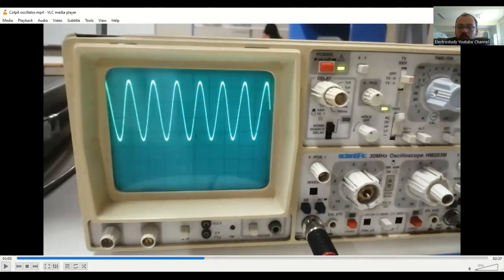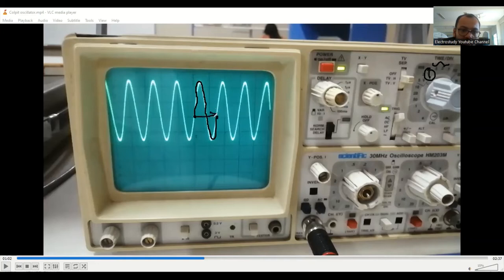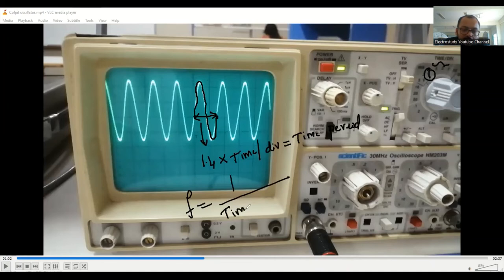I will tell you how to measure the frequency first. To measure the frequency, you have to measure the time per division. Number two, you need to measure the horizontal distance for completion of one cycle. It will be almost 1.4. This 1.4 should be multiplied with time per division. Then you will be getting the time period. Once I get the time period, how to get the frequency? Frequency is nothing but 1 by the time period. I will be getting the frequency in terms of megahertz or kilohertz. This is the way how to estimate the frequency from the CRO.